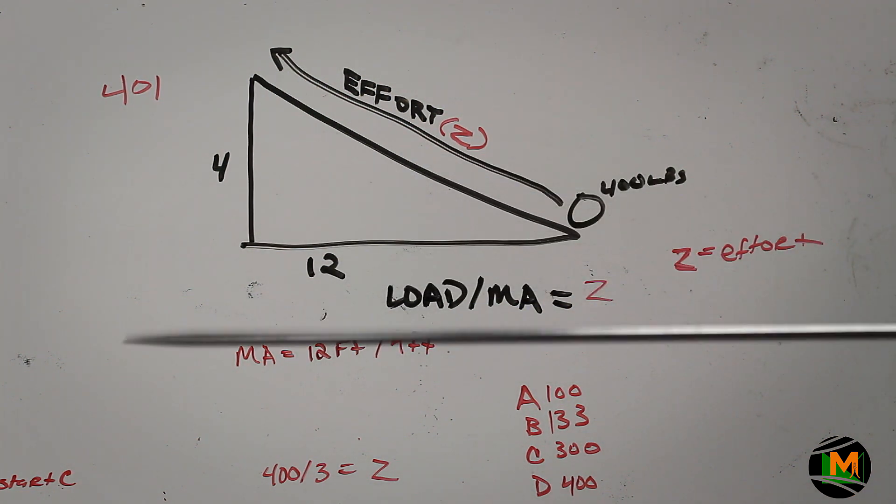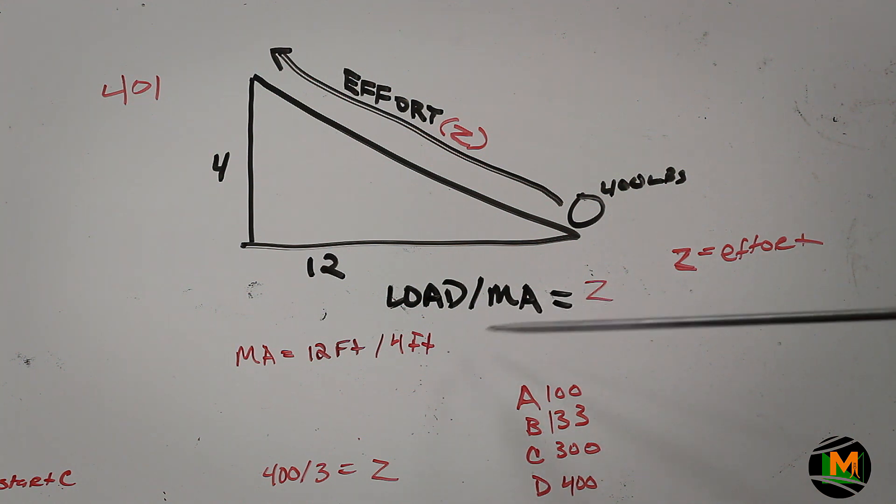To figure out the mechanical advantage, you would do the horizontal distance divided by the vertical distance. Therefore, 12 divided by 4 will give you 3. 3 is our mechanical advantage. We already have our load, which is 400 pounds. To simplify this question, 400 pounds divided by 3 will give you the effort.